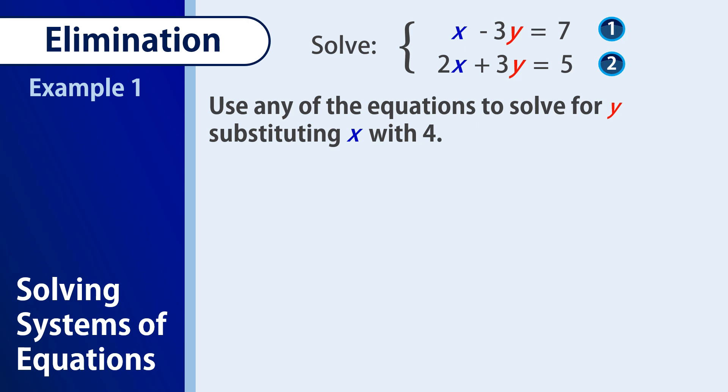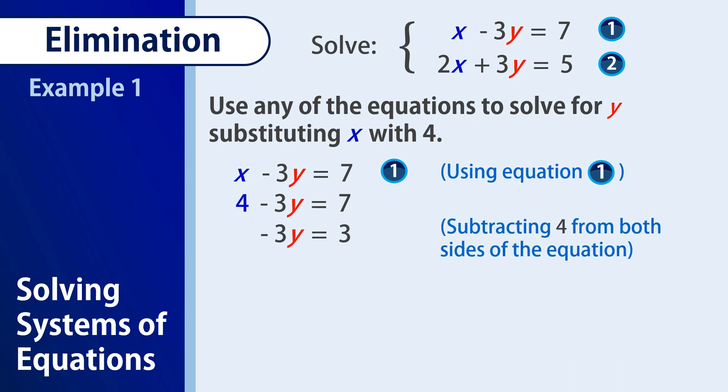From the obtained value of x which is equal to 4, we can now substitute that to our first equation x minus 3y equals 7. So that will become 4 minus 3y equals 7. By subtracting 4 from both sides, we have negative 3y is equal to 7 minus 4 is 3. And we have negative 3y is equal to positive 3.